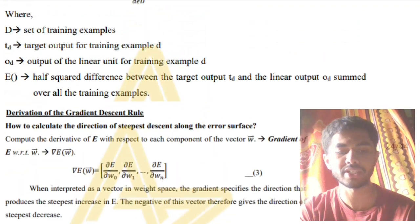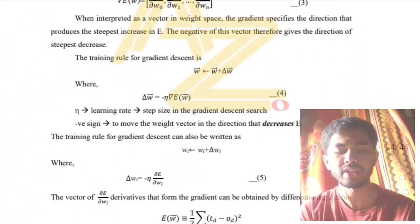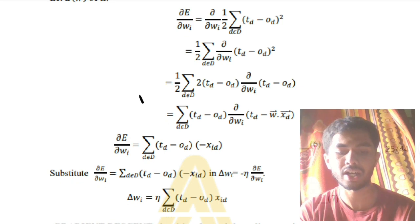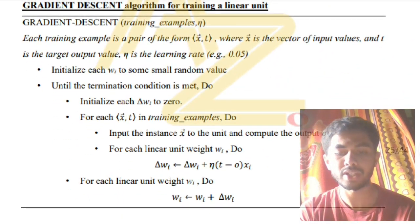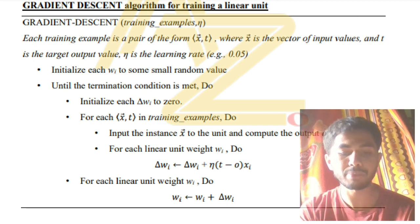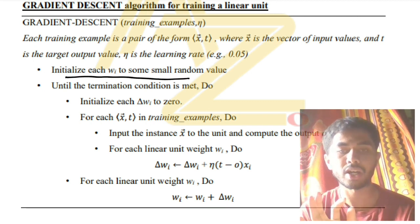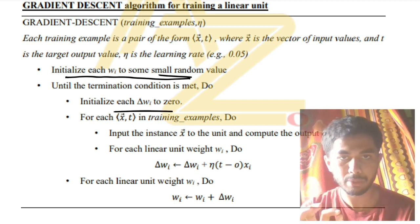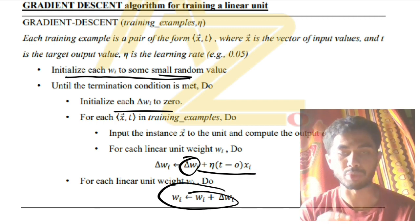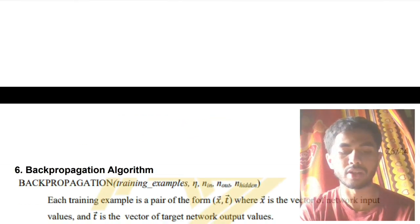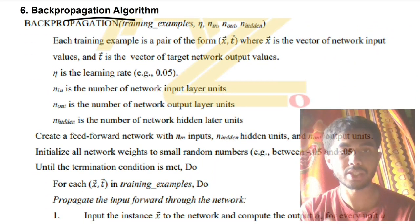The derivation for gradient descent and the delta rule is explained in the theory video. For the algorithm: consider all weights, assign random initial values, initialize Δw to zero, find the error, update the weights using the formula, and keep repeating until you reach the correct output. That was the gradient descent and delta rule. The last super important question is the backpropagation algorithm.